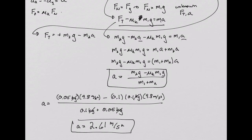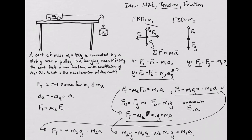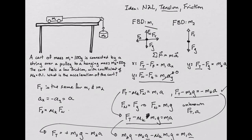So finally, interpreting this answer in terms of what we have before, we have in the following situation, where we have a 100-gram cart that's connected over a pulley to a hanging mass, and there's a small 0.1 coefficient of friction between the cart and the table. The system will accelerate at 2.6 meters per second squared.